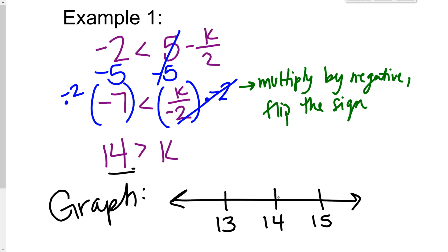14 k, I'm going to make an open circle because this is saying that 14 is greater than k, so it's an open circle. And if 14 is greater than k, that means k is going to be less than 14.